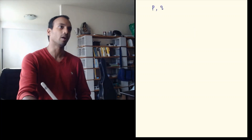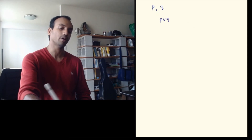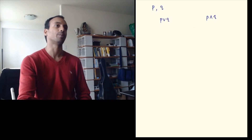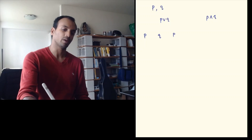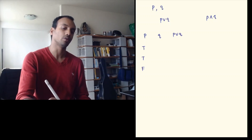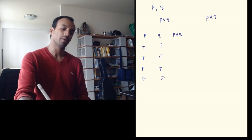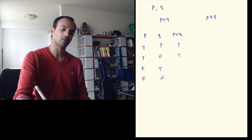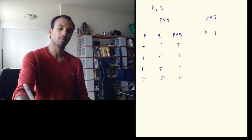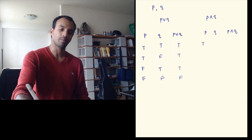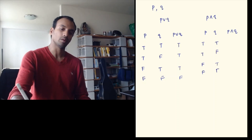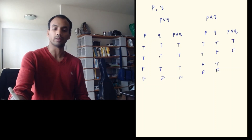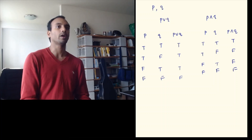Let's take p and q and write the truth tables for p∨q and p∧q — two different compound propositions. We write all possible combinations: true-true, false-false, true-false, false-true. For p∨q: true∨true is true, true∨false is true, false∨true is true, false∨false is false. For p∧q, this is true only when both are true, so it's false in all other cases.